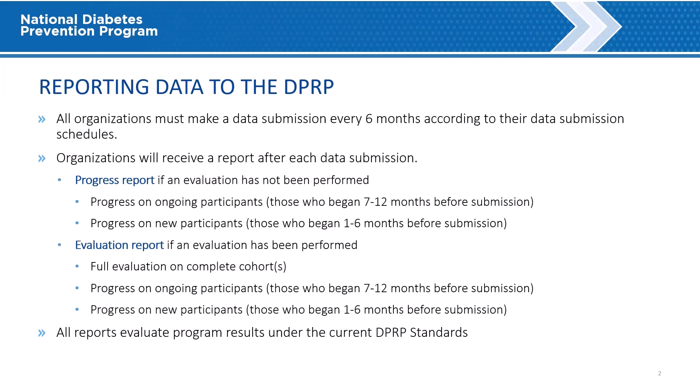Evaluation reports include the results of the evaluation on the completed cohort or cohorts, progress on ongoing participants who began 7 to 12 months before the submission, and progress on new participants who began 1 to 6 months before submission. All reports evaluate program results under the current DPRP standards. The purpose of this webinar is to walk through the different parts of the report.